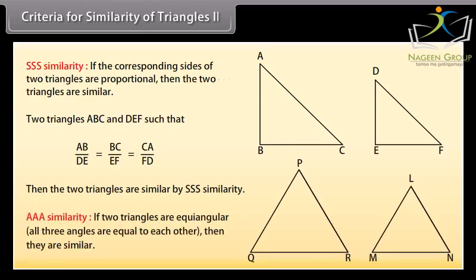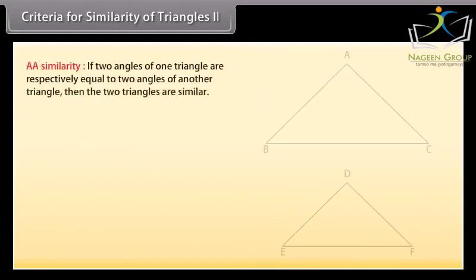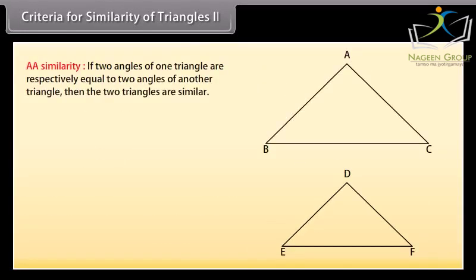AAA similarity: If two triangles are equi-angular — all three angles are equal to each other — then they are similar. If two angles of one triangle are respectively equal to two angles of another triangle, then the two triangles are similar.